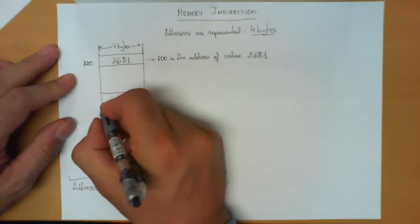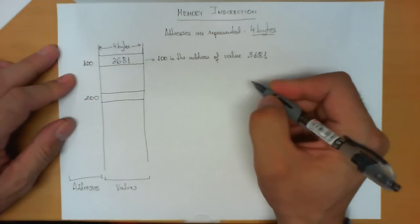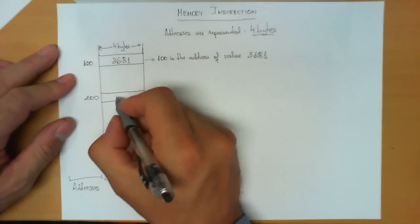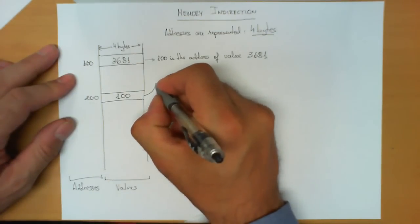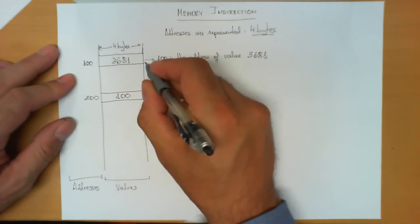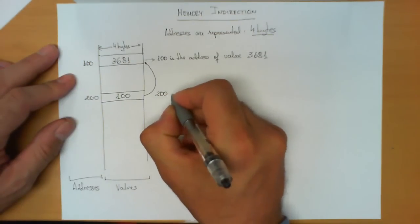Now, the indirection appears because at some other location in memory, let's say for example position 200, we can store the natural number 100. Itself is a number, and therefore it can be stored there with four bytes. Now, what is happening is that this 100 is the address of the data.